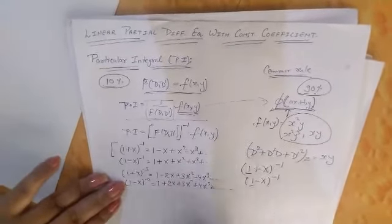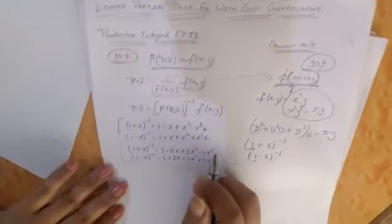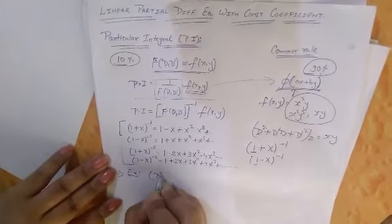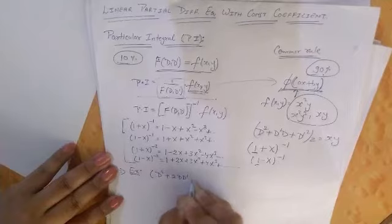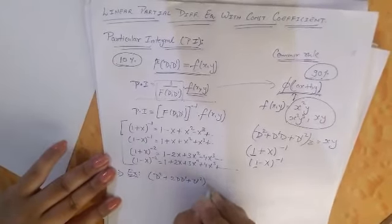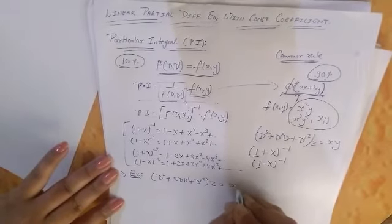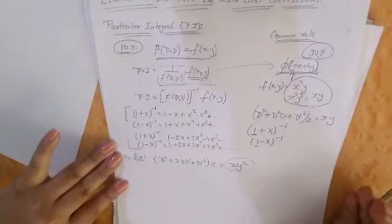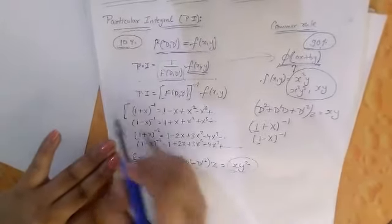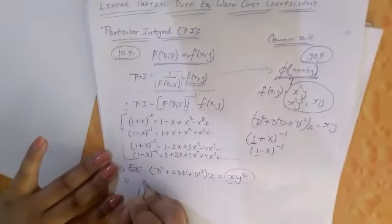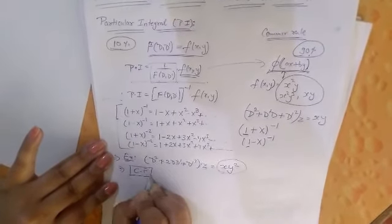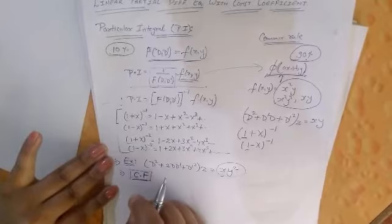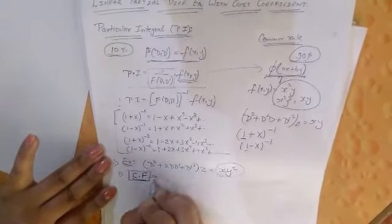If we take an example, suppose D² + 2DD' + D'²Z equals to, suppose if I took it x into y². F(x,y) we have to convert and apply. So it's very simple. First we will find out CF and then we will come to the PI.